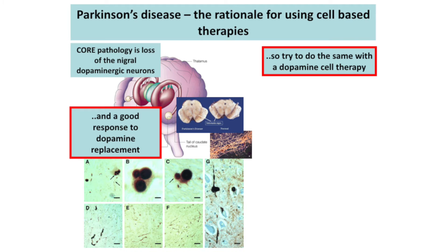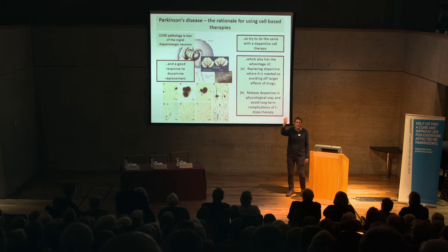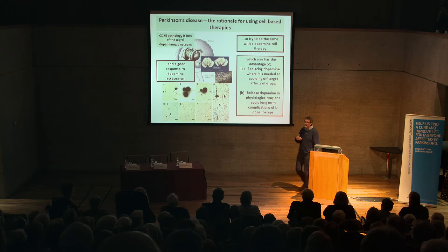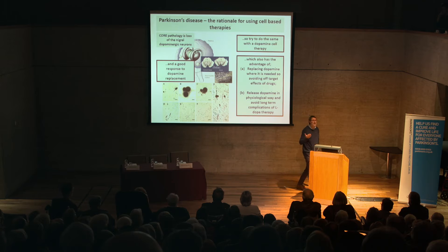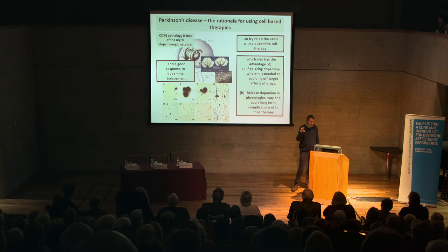Are there any advantages beyond just putting dopamine back into the brain in the form of a cell? Yes — there are two major advantages. One problem with current dopamine drugs is that when you swallow a dopamine tablet it works on the area where you've lost dopamine, but it will also work on dopamine systems in other areas of your brain. Some dopamine drugs can change people's behaviour, make people see things or become slightly confused — all because dopamine is working where it's not really needed.